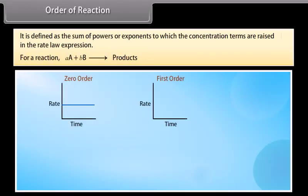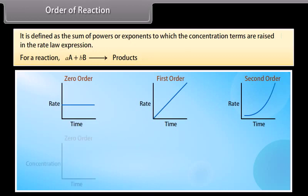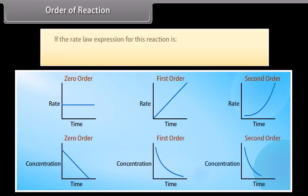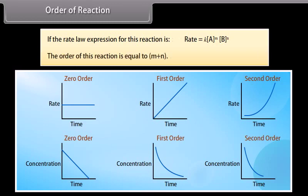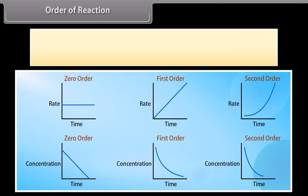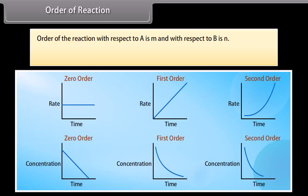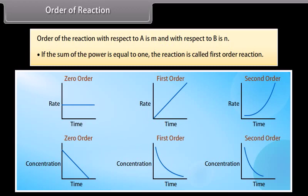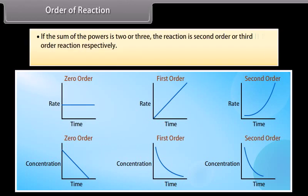Order of reaction is defined as the sum of powers or exponents to which the concentration terms are raised in the rate law expression. For a rate law: Rate = K[A]^m[B]^n, the order of the reaction equals m + n. Order with respect to A is m, and with respect to B is n. If the sum of powers equals 1, the reaction is first order; if 2 or 3, it is second or third order respectively. The order of a reaction can also be zero or fractional.